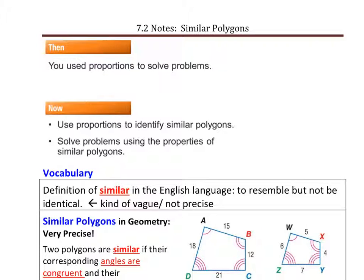Hi everyone, this is the second section of chapter 7 and it's titled Similar Polygons. As we studied in the last section, ratios and proportions, we're now going to use those to determine whether or not polygons are similar.